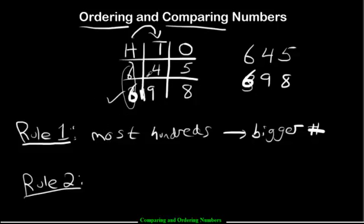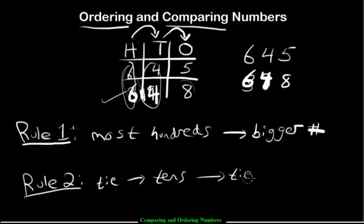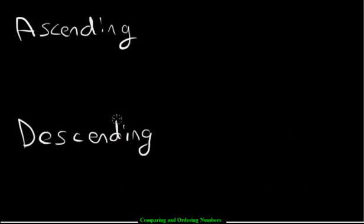But now what if the tens are tied? Let's say we have a 4 here and a 4 here. If the tens are tied, then and only then do you jump over to the ones and compare them. So in this case this number would win because the hundreds are tied, the tens are tied, and then you compare the ones: 8 is more than 5, so the bottom number wins. So if the hundreds are a tie, go to the tens; if the tens are also tied, then and only then do you go and compare the ones.